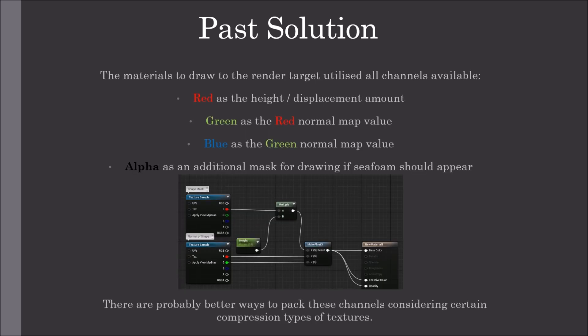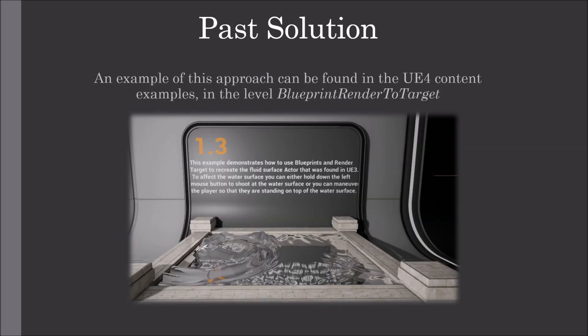The materials used to draw the render target utilised all the channels available: red as the height and displacement amount, green as the red normal map value, blue as the green normal map value, and alpha as an additional mask for drawing if seafoam should appear. An example of this approach can be found in the Unreal Engine 4 content examples in the level Blueprint render to target.